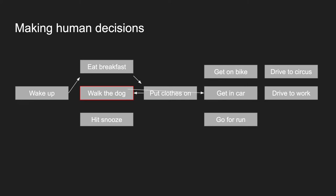After walking the dog I can skip putting clothes on since I already did that, and get in the car. I could have chosen a bike, but I jumped in the car and drove to work — not the circus. I made it from state one to state five and achieved my goal by carefully chaining my abilities together in a way that achieved the goal.